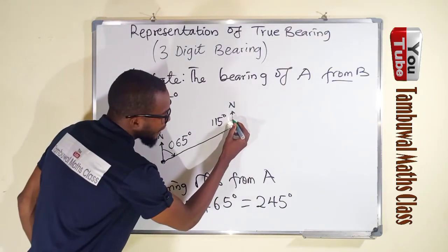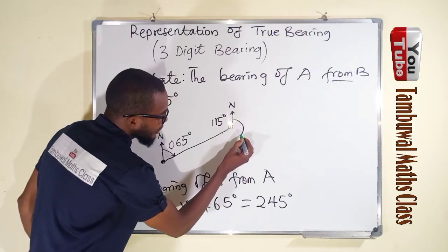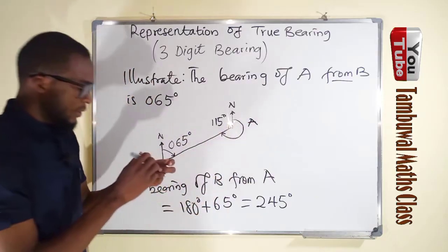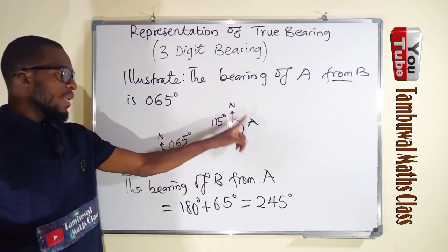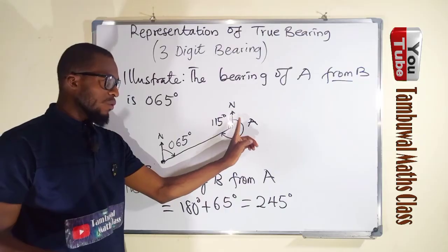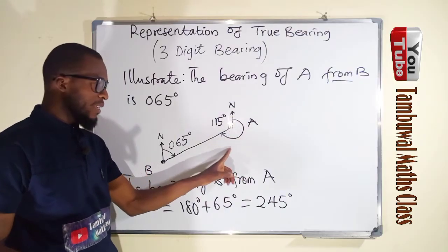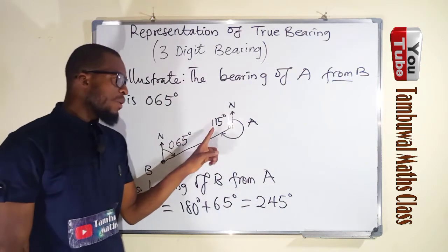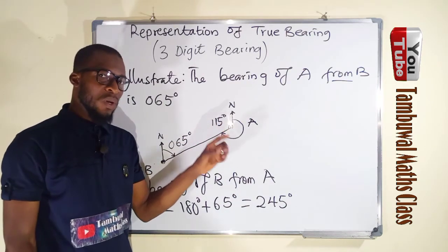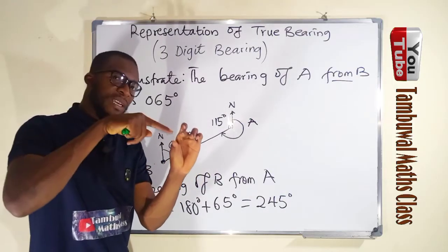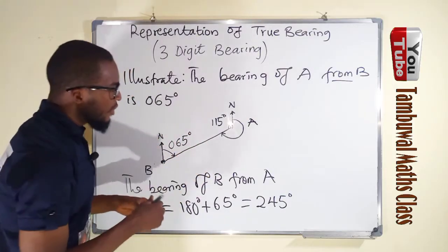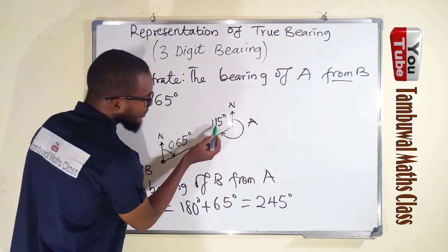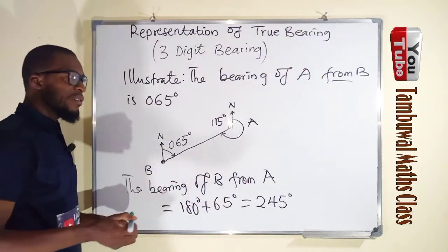So this angle will be definitely 180 minus 65, which is going to be 115 degrees. Remember this angle at the back is what we are looking for. So this is our A, point A. So the bearing of B from A is this angle from the north moving clockwise till it hits the line that leads to B. But having obtained this angle, which is 115 degrees, we know that angle at the center is 360 degrees. So to obtain this angle at the back, we can subtract this from 360 degrees.